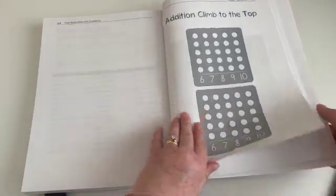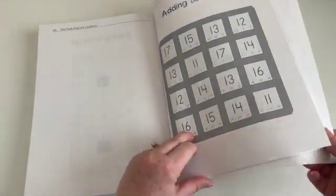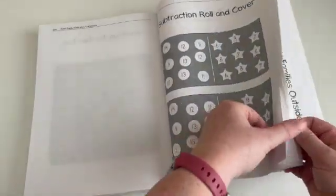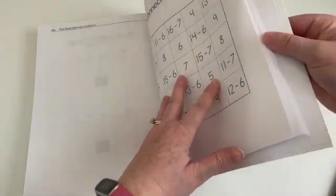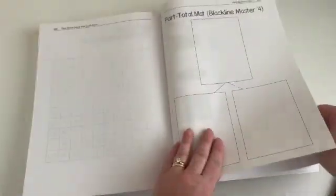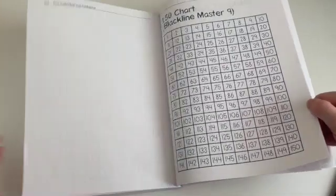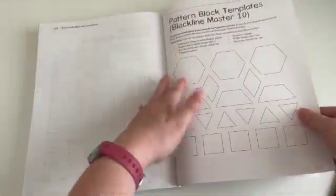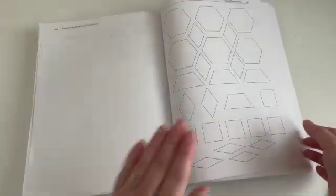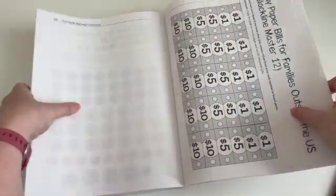And then we have our helpful resources. These are things that you can use or you need to use for a lot of the games and things. And you can copy these or you can just tear them out. So any of the game boards that you need, the part total mat, those shape cards, like these are pattern blocks. Like we have pattern blocks. So I didn't use pattern block masters, but if you don't have pattern blocks you can use these, that sort of thing. And I also have play coins. So again, I don't need these, but they're there in case you don't have these things, you can cut these up.